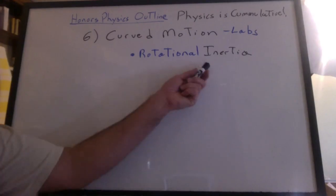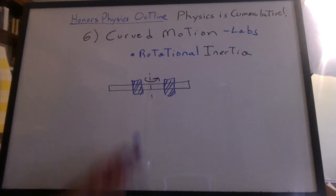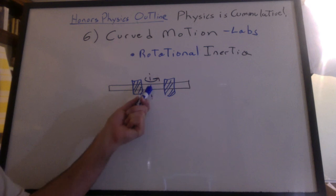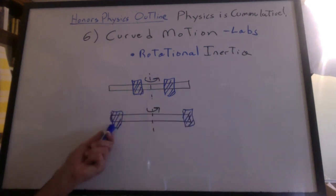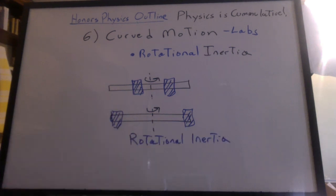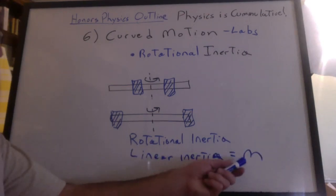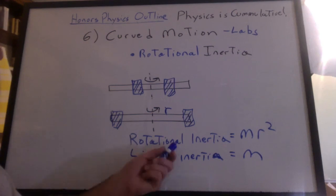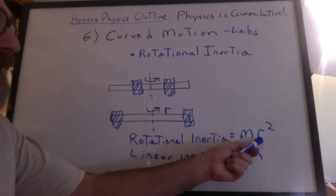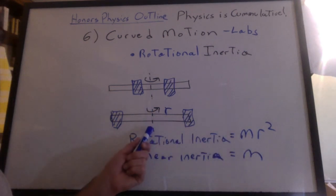And then we did rotational inertia. You got to feel it to believe it. Put a mass here and here on a meter stick and try to give it a twist. Then do it again with the masses out here. Way harder. We didn't change the mass. We changed the distance these masses have to move. So we call it rotational inertia. Linear inertia is just the mass. Rotational inertia is the mass times the distance from the axis of rotation squared.